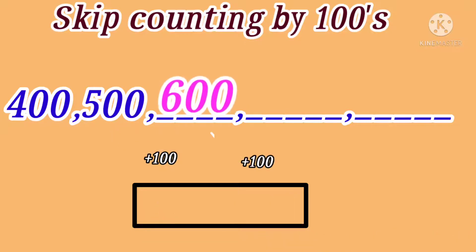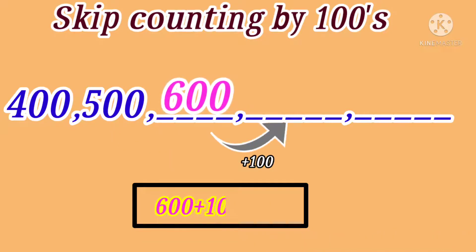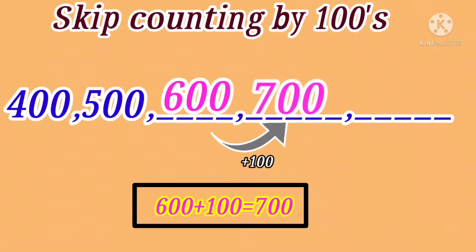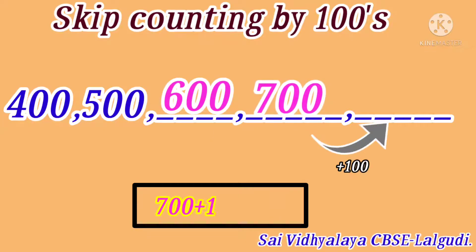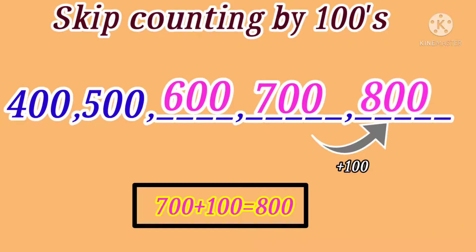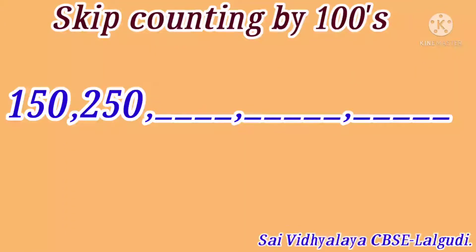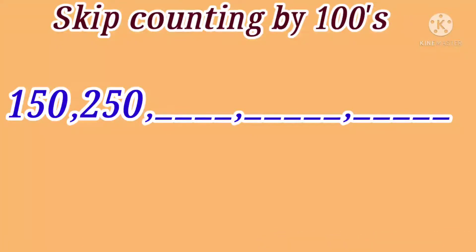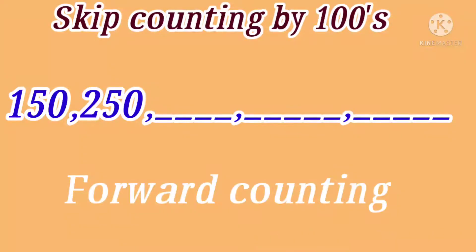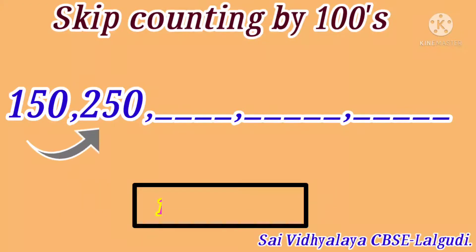600. 600 plus 100 is equal to 700. 700 plus 100 is equal to 800. Next question: 150, 250. Here also the numbers are given in forward counting order. 150 plus 100 is equal to 250. 250 plus 100 is equal to